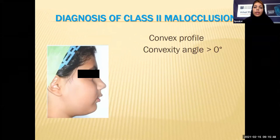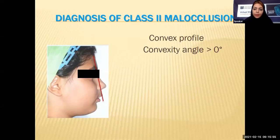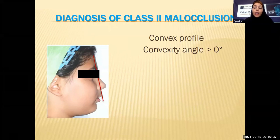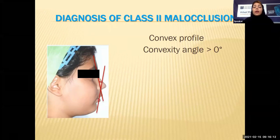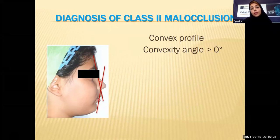So let's go to the diagnosis of class 2 malocclusion. First, we see the patient and judge according to facial appearance. Usually class 2 patients have a convex profile, but don't misunderstand — a child with a convex profile is not necessarily a class 2 patient. In children, mandibular growth is more than maxillary growth, so a relatively convex profile in children is considered normal. But when a patient is adult and has a convex profile, it can indicate class 2.